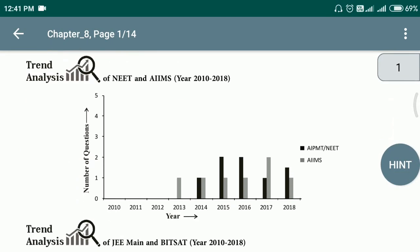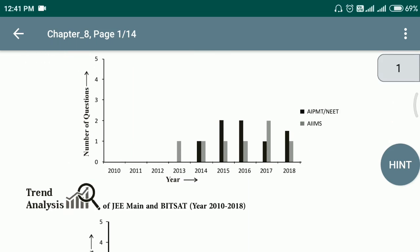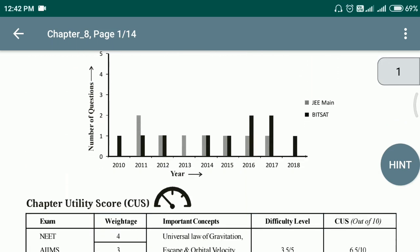In a chapter, you can do the last trend analysis. In the last 10 years, NEET and AIIMS. So you can do the super trend analysis. So AIPMT is dark color, AIIMS is light color. Next, JEE main bit-settle, what are the important questions?